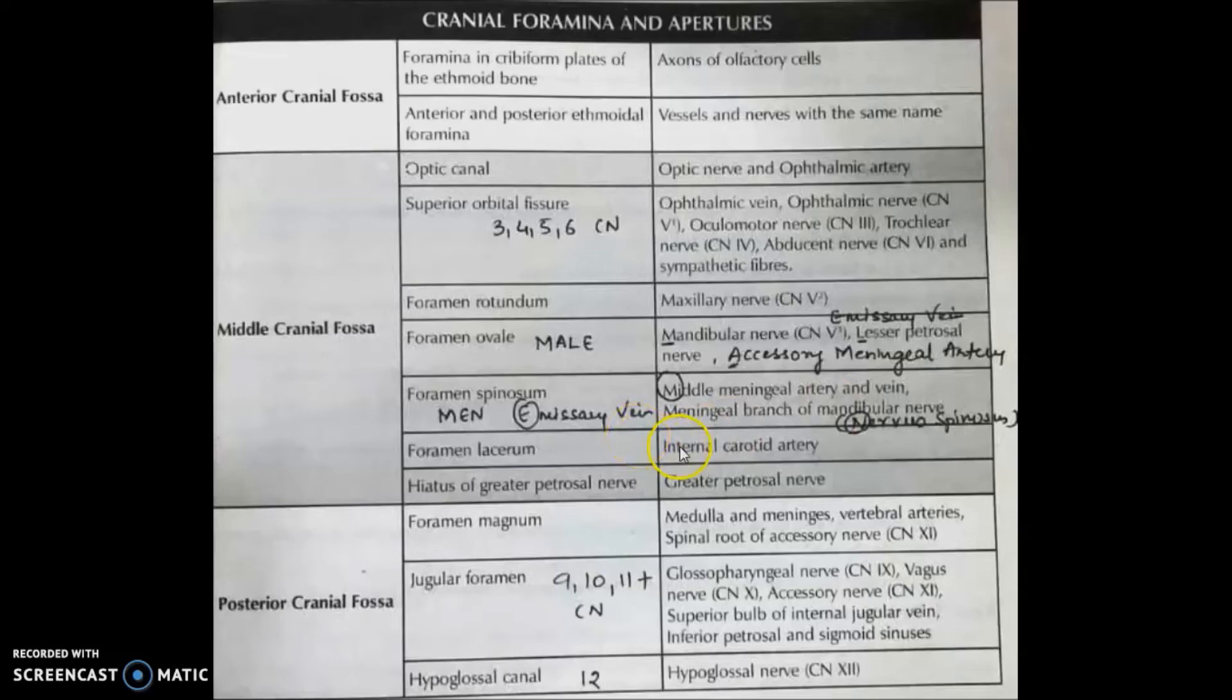Through foramen lacerum, internal carotid artery passes. Through hiatus of greater petrosal nerve, the greater petrosal nerve passes.